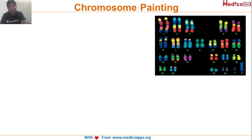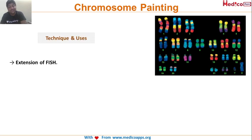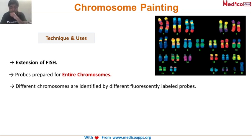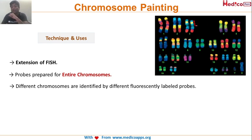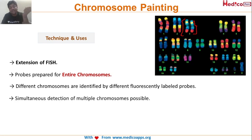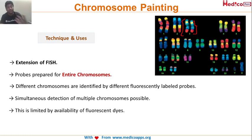There are two major modifications of FISH to know. First is chromosomal painting — an extension of FISH where fluorescent probes are prepared for the entire chromosome. Different chromosomes are identified by differently labeled fluorescent probes. You can see all chromosomes colored with different probes, and each chromosome may have more than one color. Simultaneous detection of multiple chromosomes is possible. The main limitation is the limited availability of fluorescent dyes.